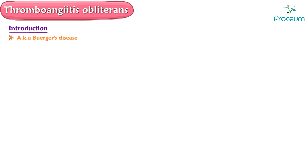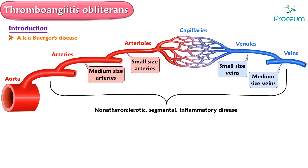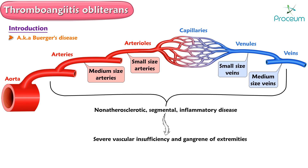Thromboangiitis obliterans, also called Buerger's disease, is a non-atherosclerotic, segmental, inflammatory disease that most commonly affects the small to medium-sized arteries and veins of the extremities, both upper and lower, resulting in severe vascular insufficiency and gangrene of extremities.